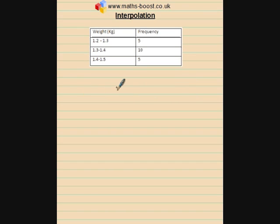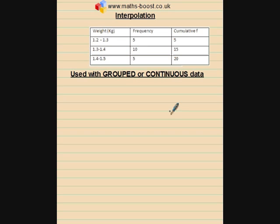So I'm going to demonstrate the method of interpolation when we're dealing with this grouped frequency table, and we always use interpolation when the data is grouped or when it's continuous data. Now the first thing that I would advise you to do is add a third column for cumulative frequency, because that will be useful later on.